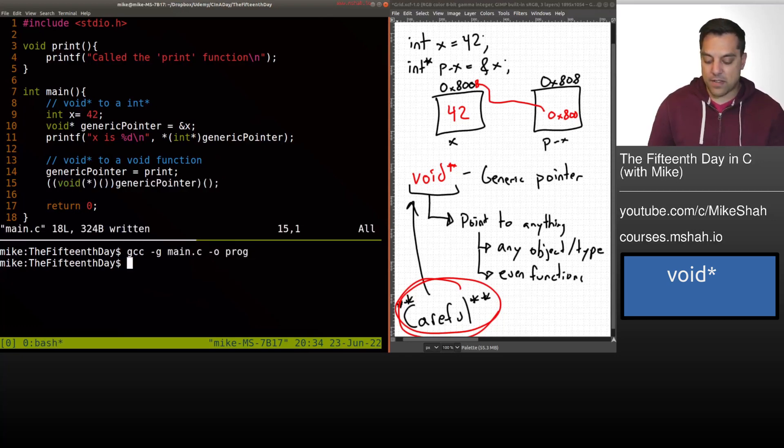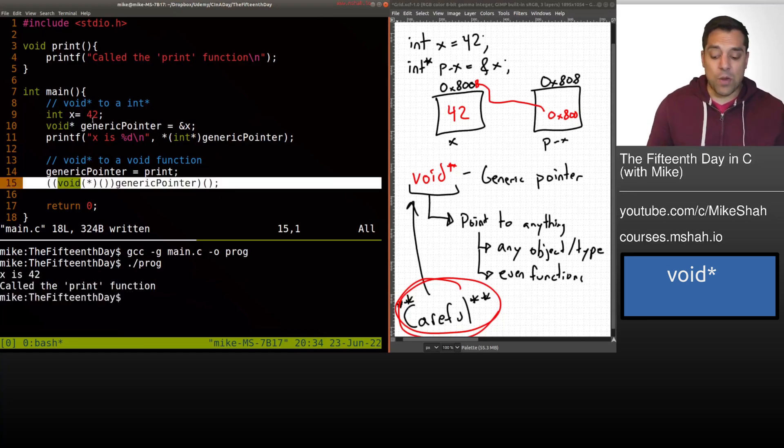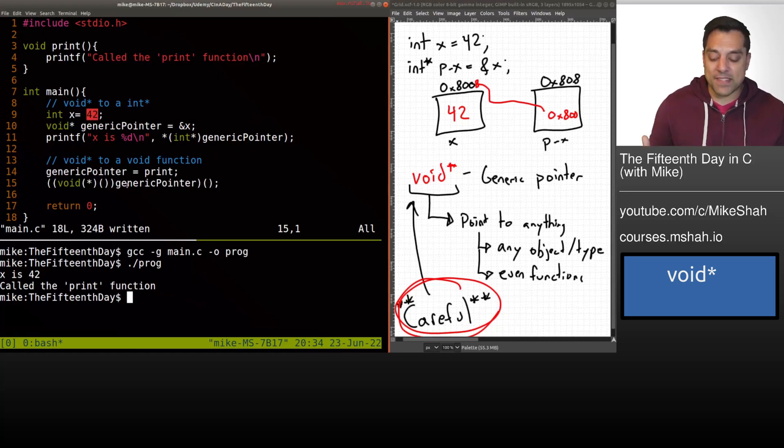So again, let's just go ahead and compile it, rerun it. And we can see that this is what's calling the print function. At one point, it was pointing to this memory address. And then another point, it's pointing to the actual function here.